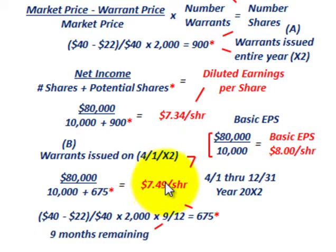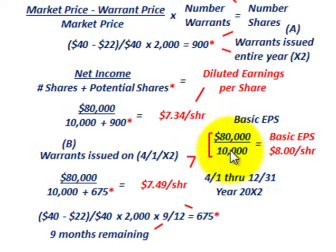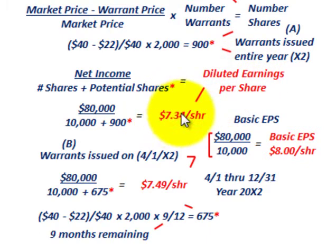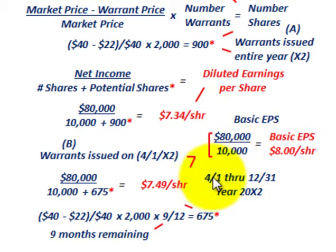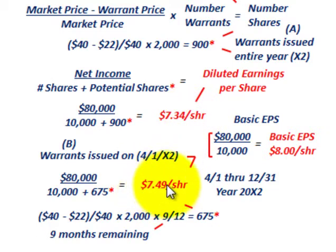Comparing to basic earnings per share: basic EPS does not include any dilutive effect from the warrants. You simply take net income of $80,000 divided by 10,000 average common shares outstanding, giving basic EPS of $8.00 per share. You can see the dilutive effect of the stock warrants: $7.34 for the full year case versus $8.00 basic EPS. When the warrants were outstanding for only part of the year, diluted EPS was $7.49 — still less than basic EPS of $8.00, but slightly higher than the full-year diluted EPS.